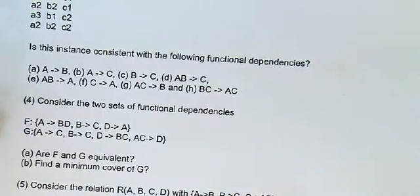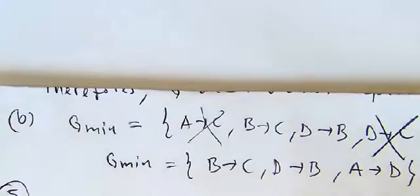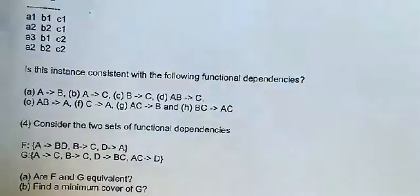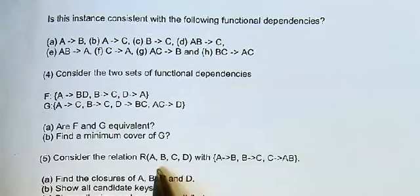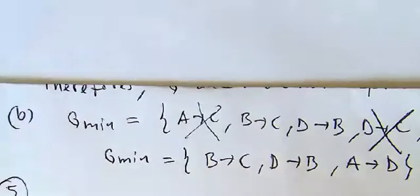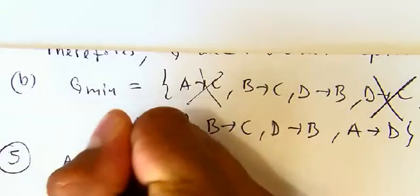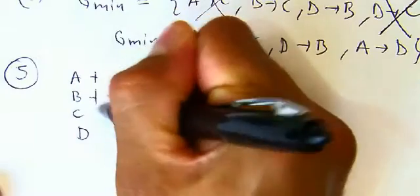Now for question five, we have a table with attributes A, B, C, D and the given functional dependencies. We need to compute the attribute closures. For A+, the initial value is A. Using A→B we add B, then from B→C we add C, giving us A+ = {A, B, C}.